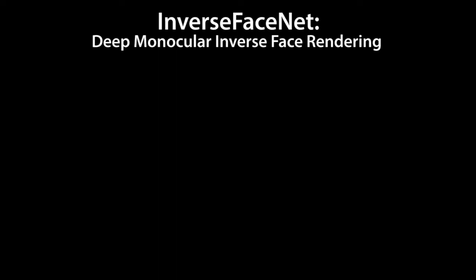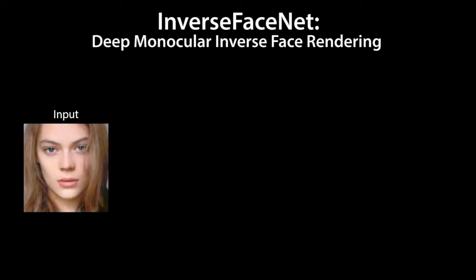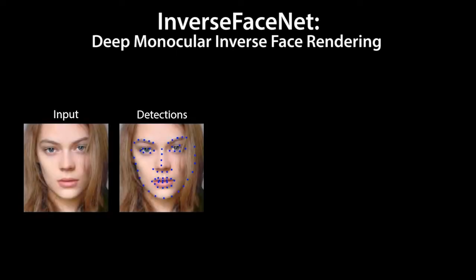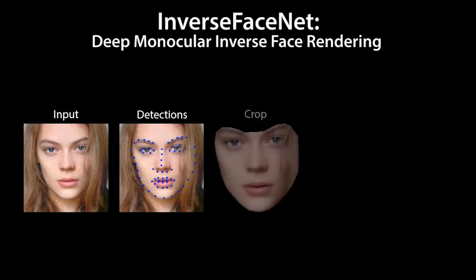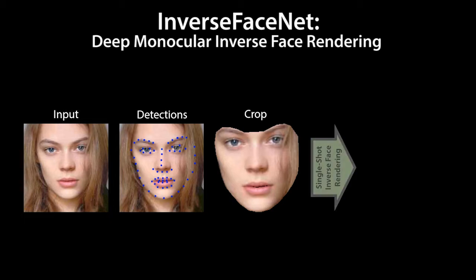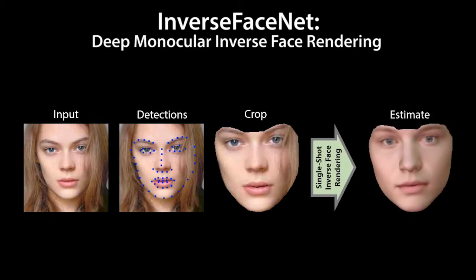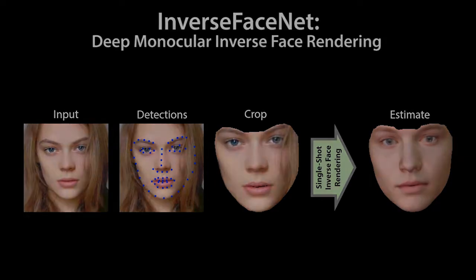In the following, we explain our approach in more detail. Given an arbitrary image of a phase as input, we first detect a set of 66 landmarks. We use these landmarks to compute a tight crop of the phase region. Based on this crop, our Inverse PhaseNet estimates a high quality reconstruction of surface geometry, reflectance, and scene illumination.